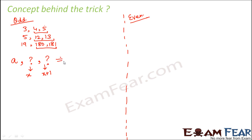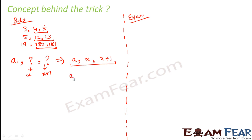Now we have a (the given value), x, and x plus one. If these three form a Pythagorean triplet, they should satisfy the Pythagorean relationship: the sum of squares of the two smaller numbers equals the square of the largest. Since x plus one is bigger than x, we can write: a² + x² = (x + 1)².